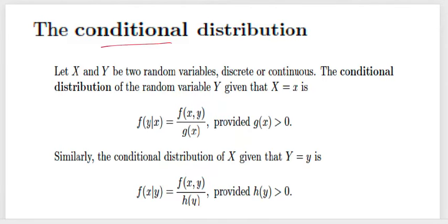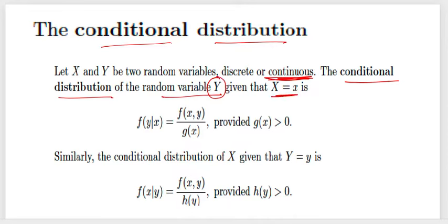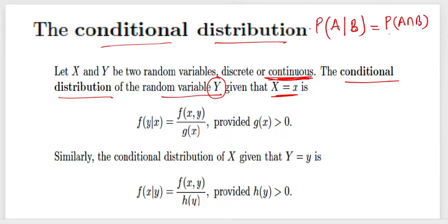The second important concept is the conditional distribution — how we deal with conditional distributions when we have a function of two variables. For continuous cases, if we want to find the conditional distribution of random variable y given x, we recall that from probability theory, P(A|B) = P(A∩B) / P(B) where B is not equal to zero. The same logic applies here.